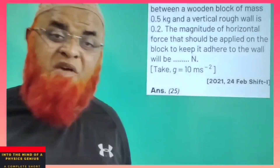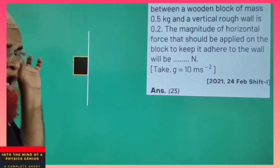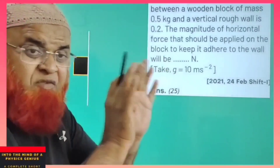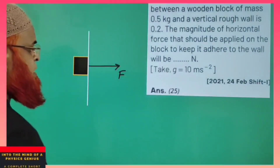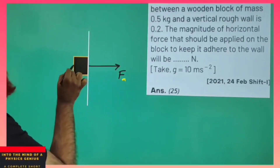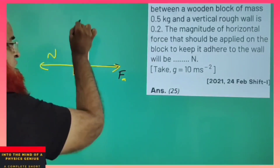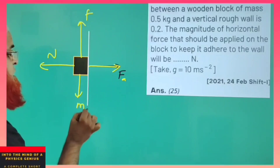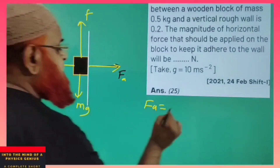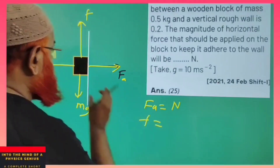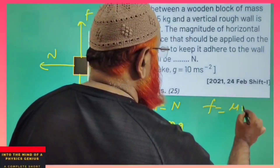Previous year JEE question 2021. There is a wall on which a block has been fixed by the applied force. The applied force acts forward. In the opposite direction, normal reaction is acting. Friction acts in the upward direction, Mg in the downward direction. Applied force is counterbalancing normal reaction, and friction force is counterbalancing Mg.